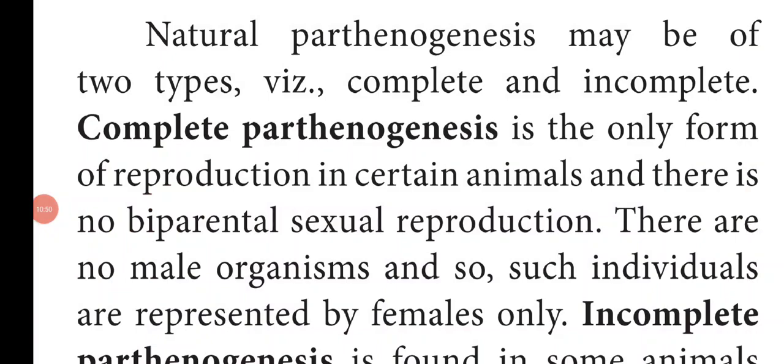Natural Parthenogenesis is mainly classified into two types: Complete Parthenogenesis and Incomplete Parthenogenesis. Complete Parthenogenesis is the only form of reproduction in certain animals and there is no biparental sexual reproduction. There are no male organisms, and such individuals are represented by females only.